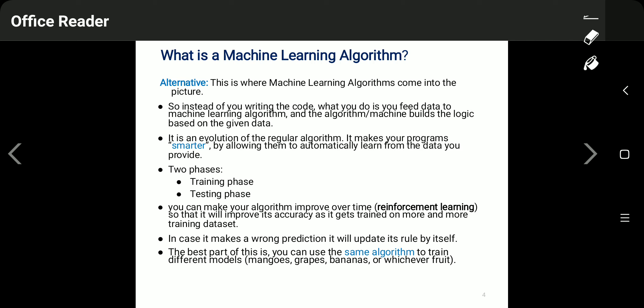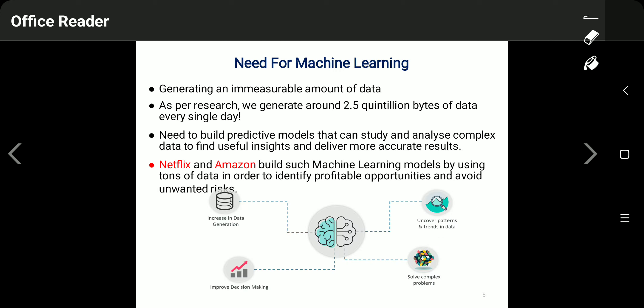In case the model makes a wrong prediction, it will update itself automatically. The best part is you can use the same algorithm to train different models — the same algorithms can be used for different kinds of problems. For example, whether you choose guava, mango, banana, or any other fruit, the same algorithm can be applied. This is the beauty of machine learning.